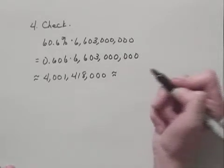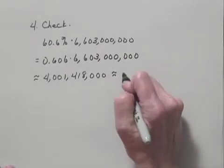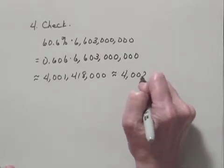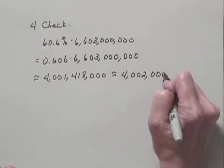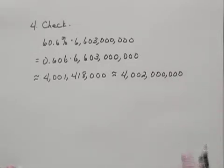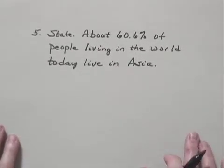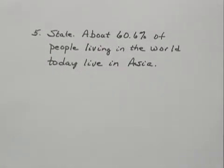And that's approximately equal to the number of people that we were told who live in Asia, which was 4,002,000,000. So our answer checks, and we can now state the result. About 60.6% of people living in the world today live in Asia.